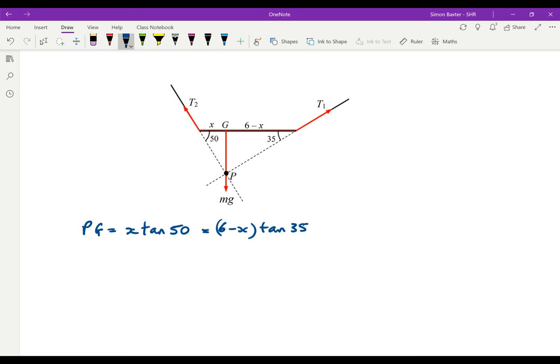If we solve this, we simply get x is equal to, well, 6 tan 35 is left on the right-hand side. And if I add x tan 35 to each side and divide, I get tan 50 plus tan 35.